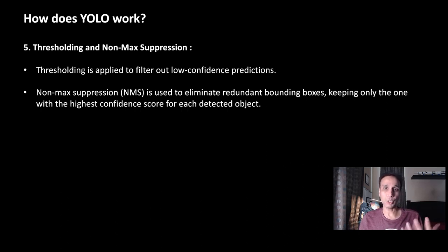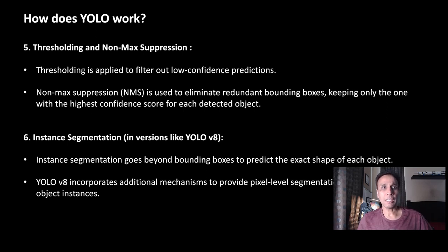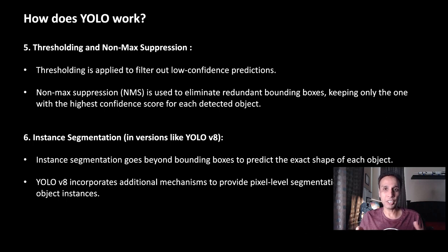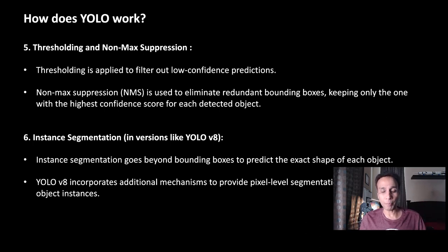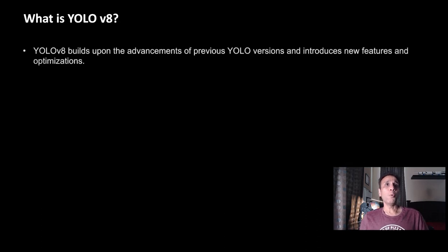Instance segmentation goes beyond object detection. Object detection puts a bounding box around your object; instance segmentation gives you that box AND segments the corresponding pixels of the object of interest within it. Mask R-CNN is a great example. YOLOv8 actually incorporates instance segmentation, and that's why I started giving it serious consideration for scientific image analysis.